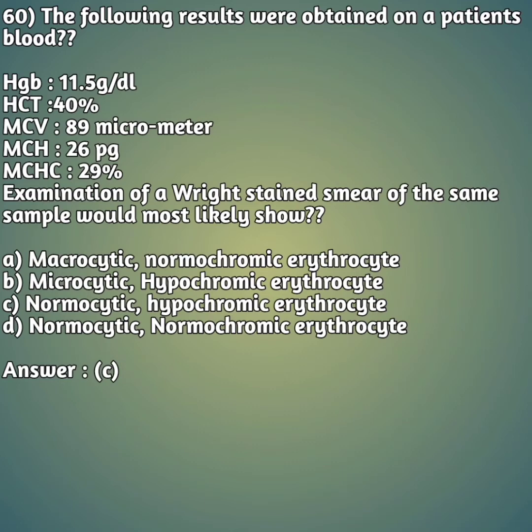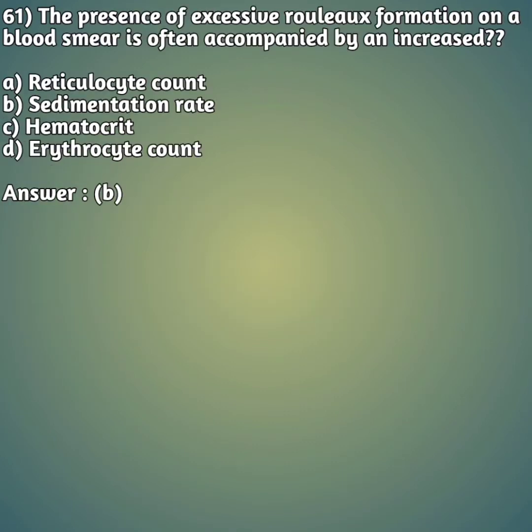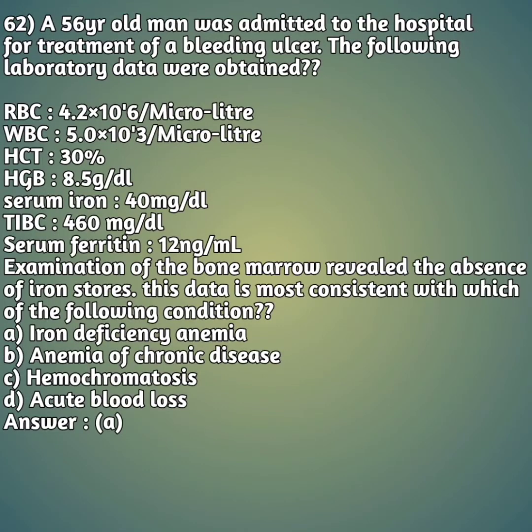Moving on to question 61: the presence of excessive rouleaux formation on a blood smear is often accompanied by an increased - option A: reticulocyte count. Option B: sedimentation rate. Option C: hematocrit (PCV). Option D: erythrocyte count (RBC count). The right answer is option B - sedimentation rate. Rouleaux formation means the RBCs are arranged in a coin-like appearance.